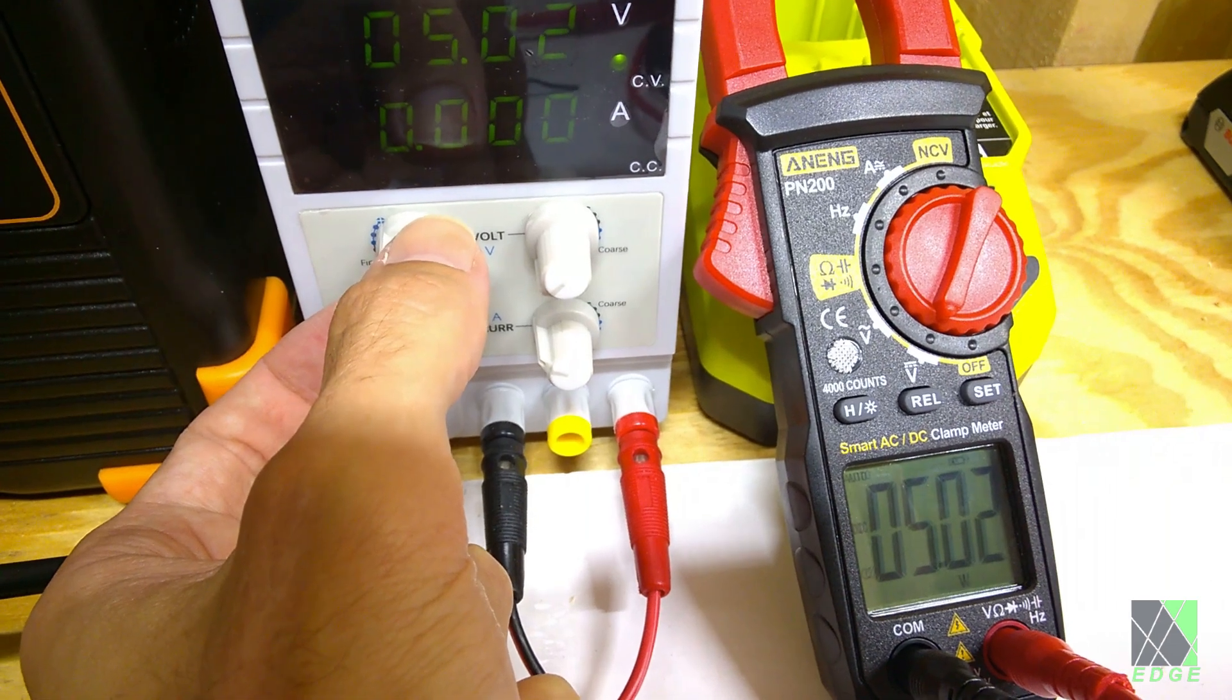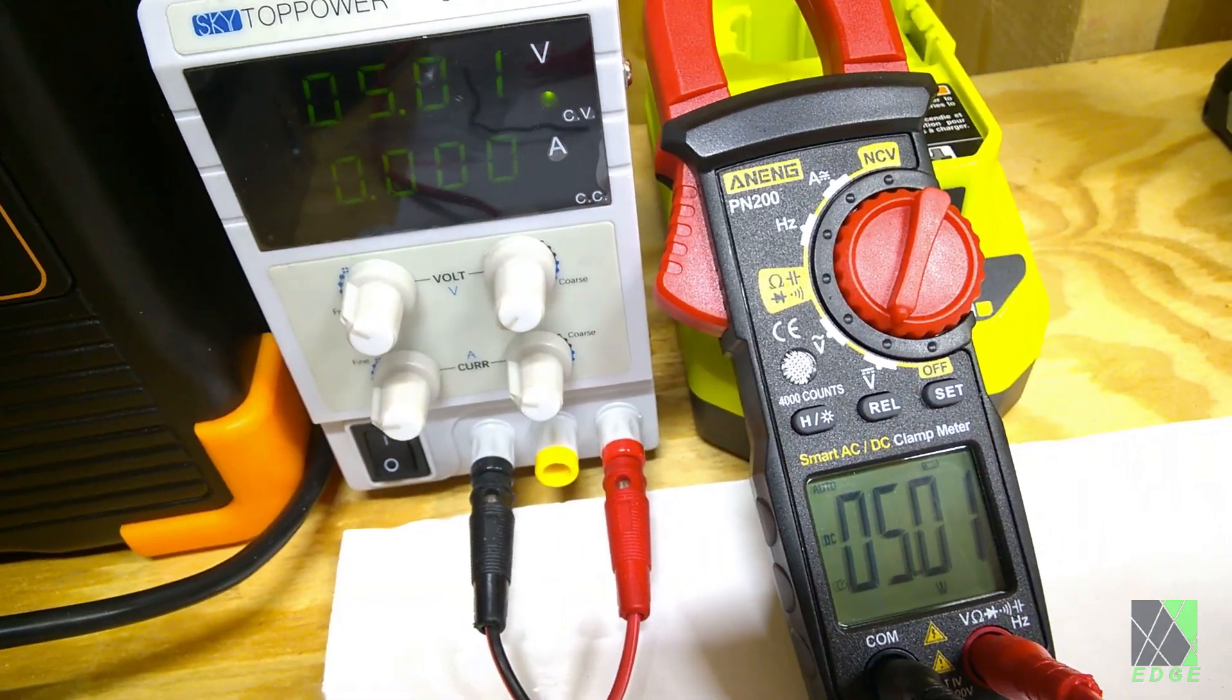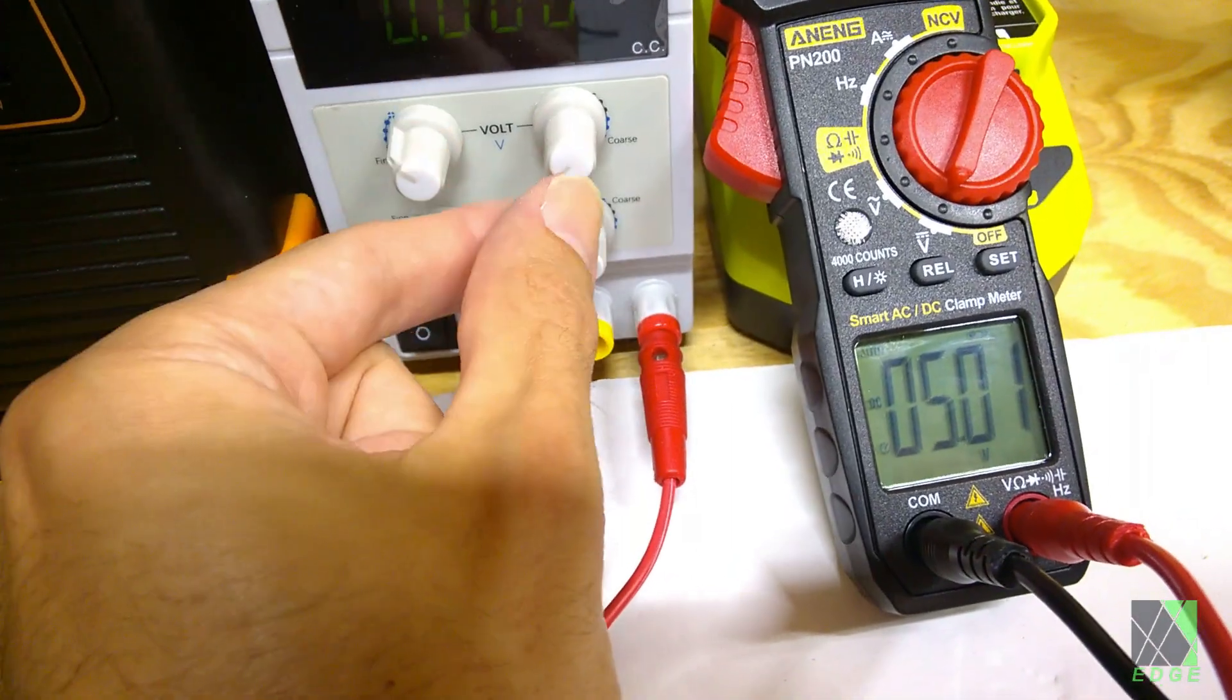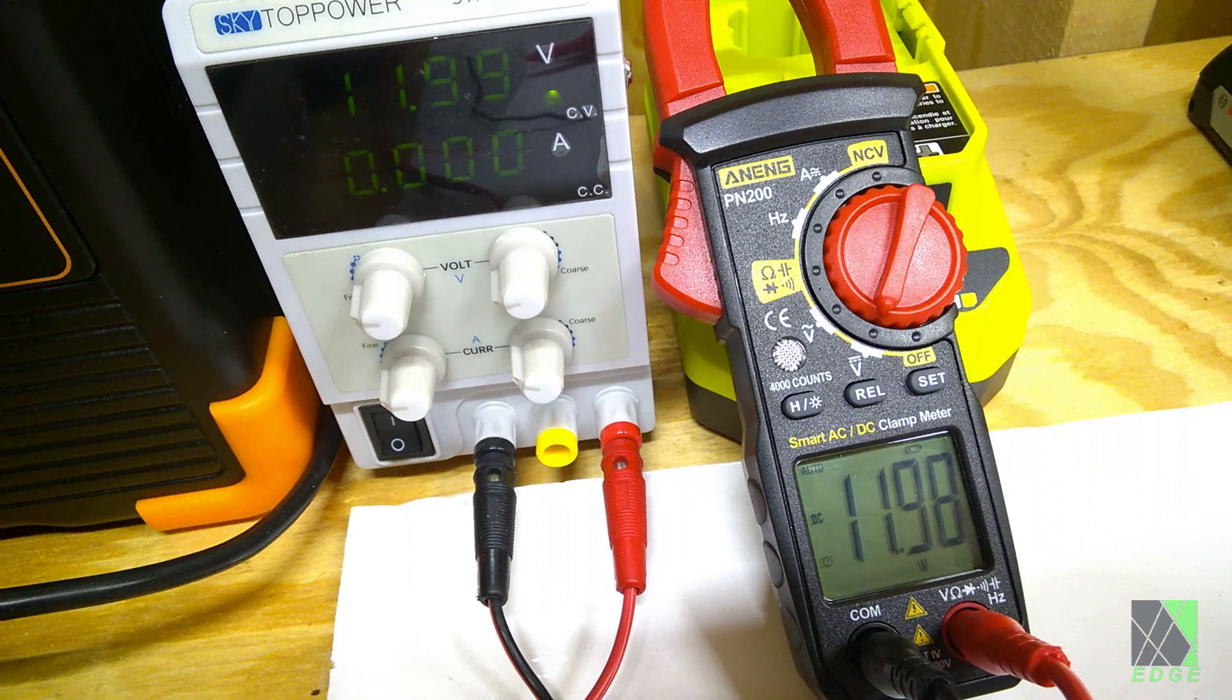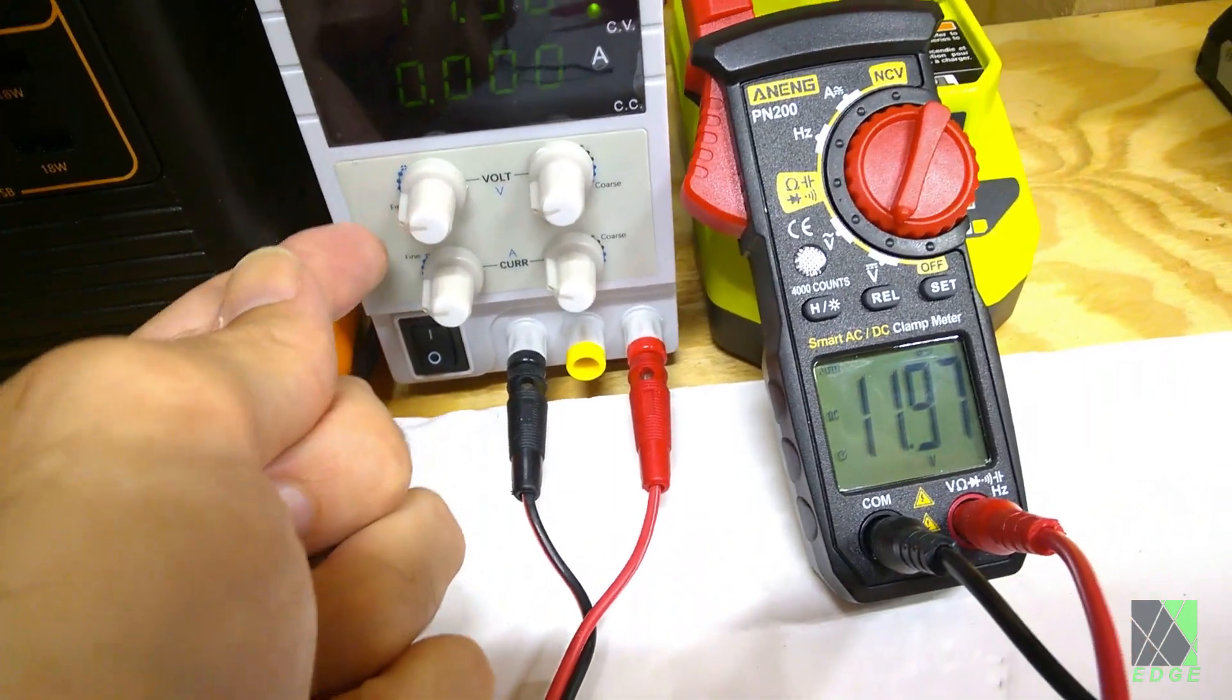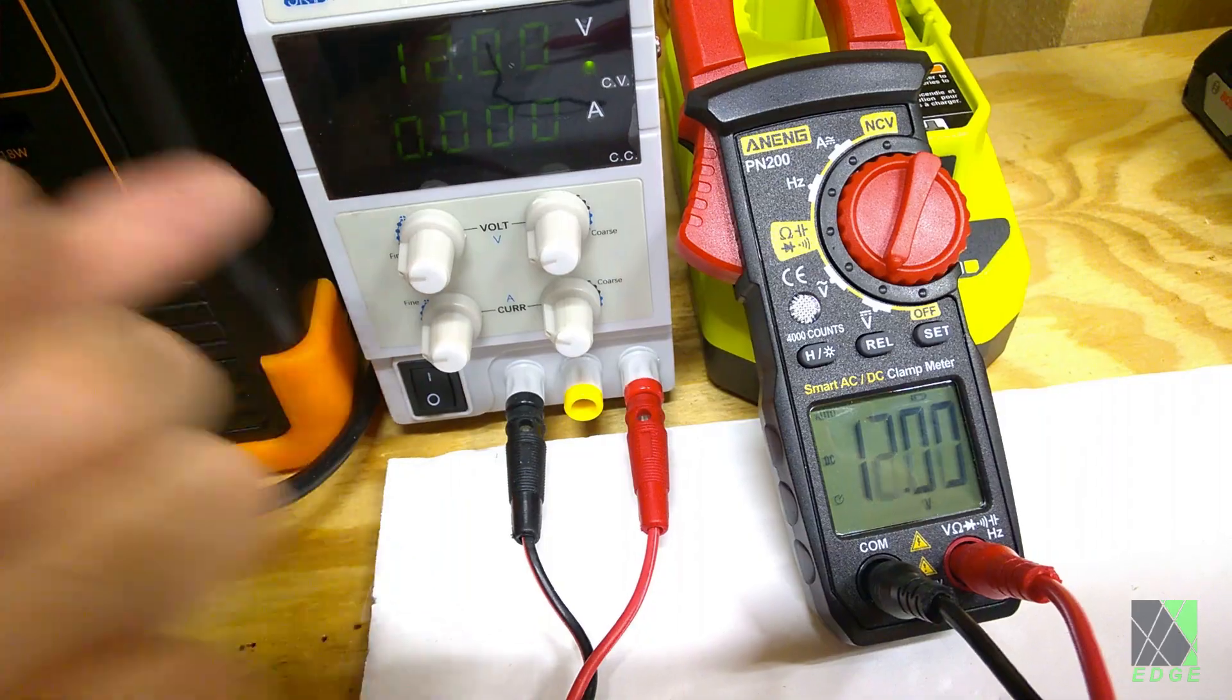Here I use my benchtop power supply to check the accuracy of the voltage measurement. My power supply is already known to be quite accurate. The voltage readings on the Aneng meter were within 0.01 volts or less of my benchtop supply, so it passes the test. It is very well calibrated.